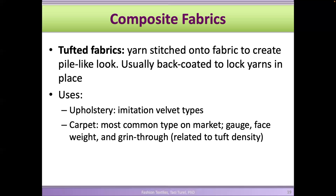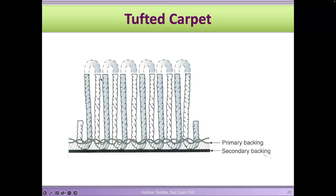Carpets generally go through this tufting process, as does some imitation velvet. Looking at a cross section, you see the warp and filling yarn of the woven primary fabric, then these yarns are stitched through to create the piles. You can cut the piles or leave them uncut, and then you coat the bottom of the fabric so the piles don't come off.